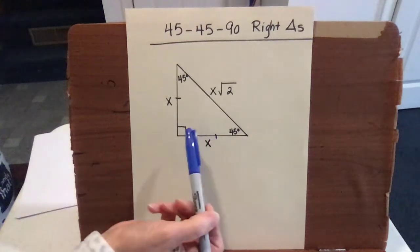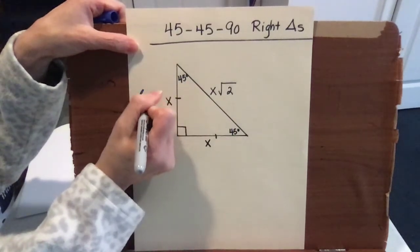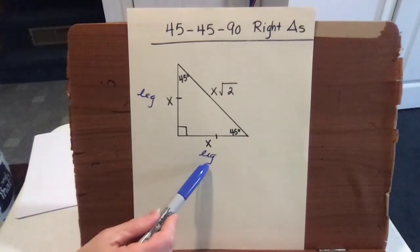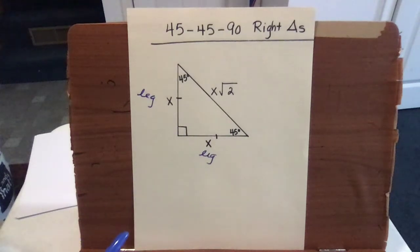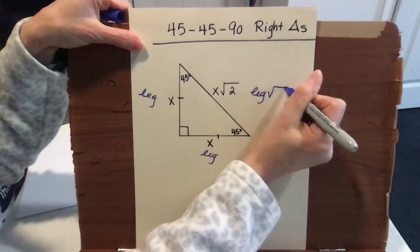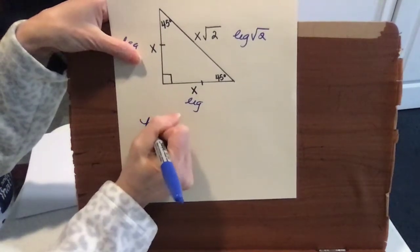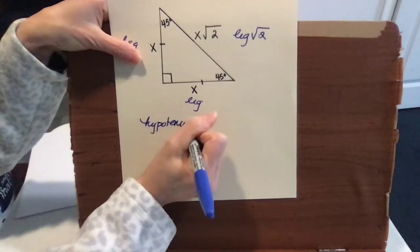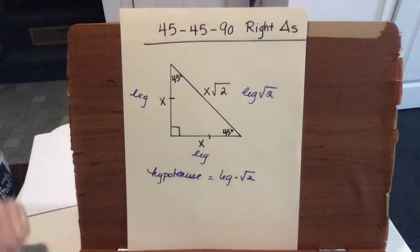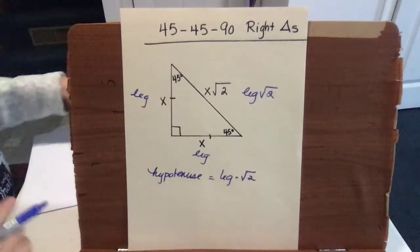The relationship in a 45-45-90 right triangle is that the two legs are equal, because they're opposite equal angles. So remember that this triangle is an isosceles triangle. Each of these legs is the same, and the hypotenuse relationship to those legs is always the leg times radical 2, or the leg times the square root of 2. Using that quick formula, we can find a hypotenuse given a leg, or the legs given the hypotenuse.